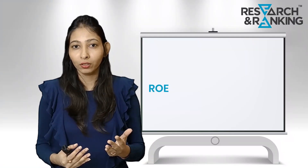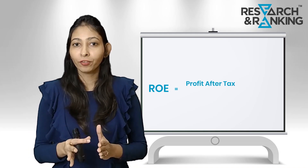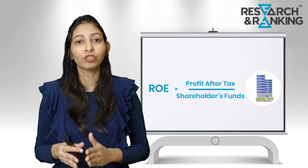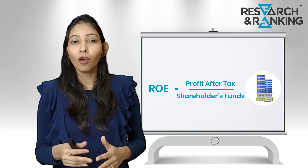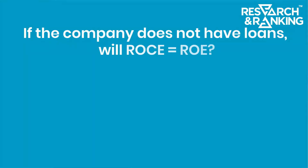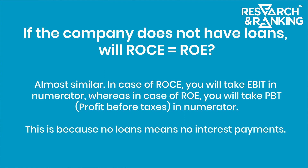ROE is calculated as Profit After Tax divided by Shareholders' Funds. If a company has no loan on its books, ROCE and ROE would be almost similar. The only difference is that ROCE uses EBIT in the numerator (earnings before interest and taxes), and with no loan there is no interest — so EBIT becomes Profit Before Tax. ROE, on the other hand, uses Profit After Tax. That's the key difference between the two.